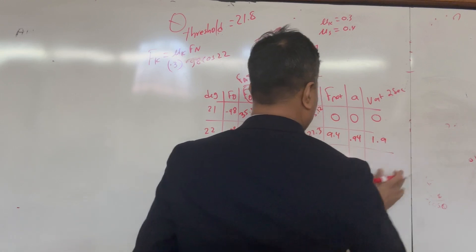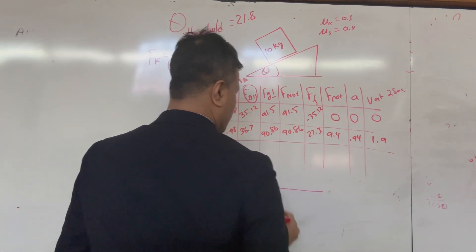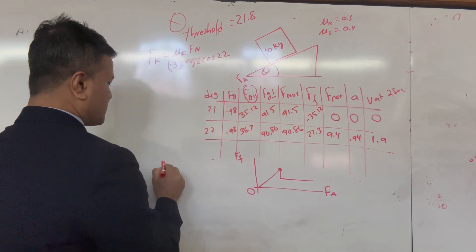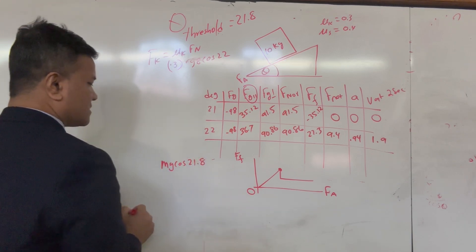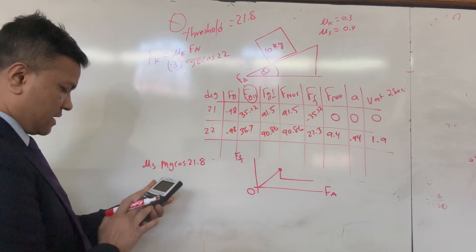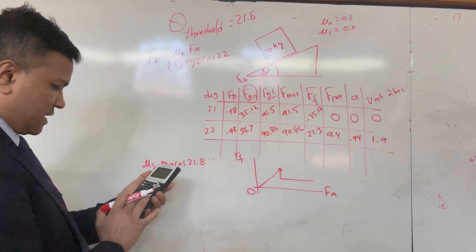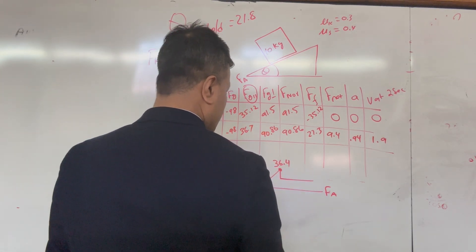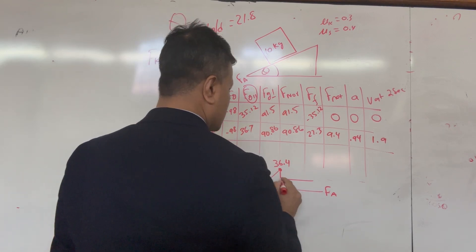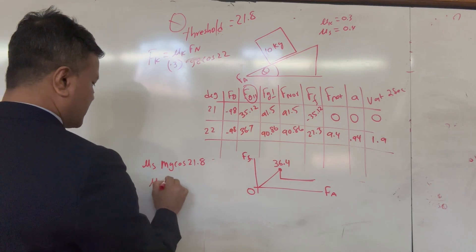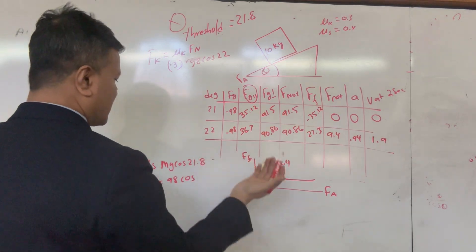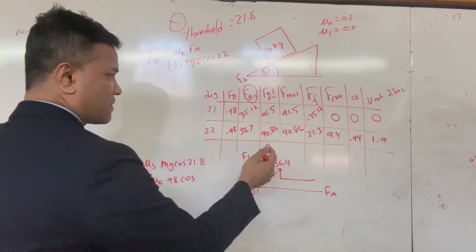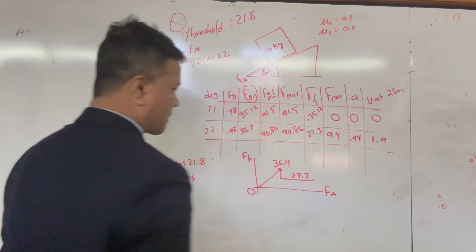For the friction graph on the incline: the x-axis is applied force, y-axis is friction. The maximum static friction at the threshold angle (21.8°) is μs·mg·cos(21.8°) = 0.4 × 98 × cos(21.8°) ≈ 36.4 N. Once the angle exceeds threshold, friction falls to kinetic: at 22°, fk = 27.3 N.